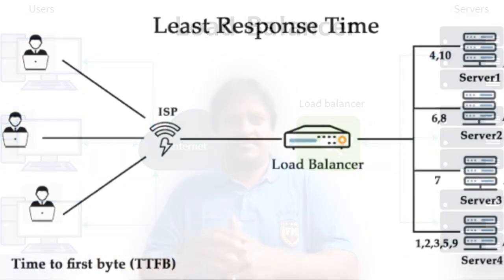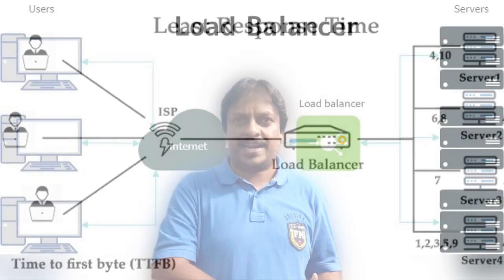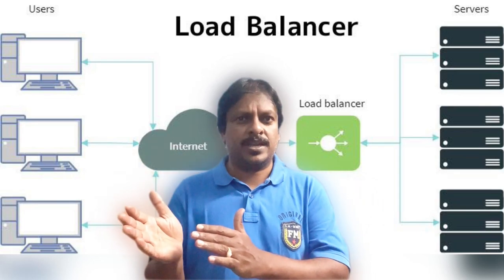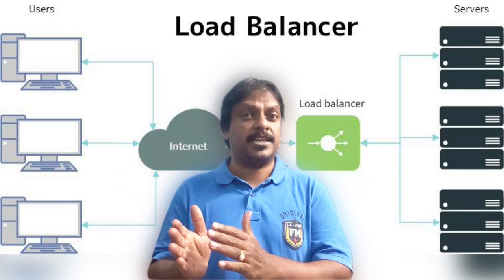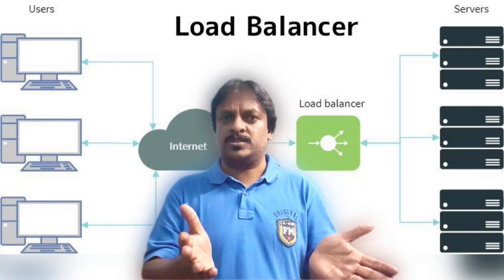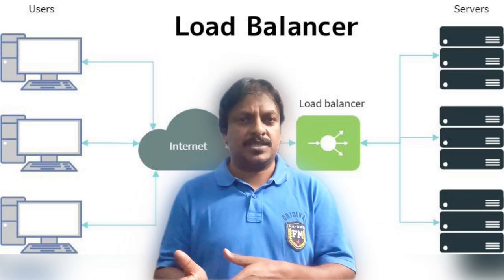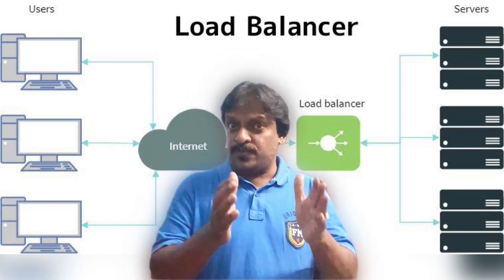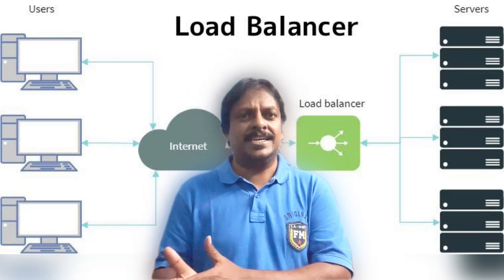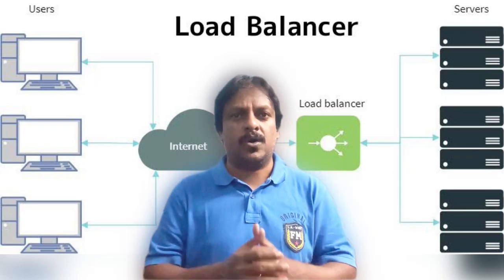Our next load balancing algorithm is least time. How it works is when a request comes from the client, the request will be sent to the server which has the least response time. Some servers may have 100,000 milliseconds response time, some may have 100 milliseconds, and some may have 10 milliseconds. The request will go to the server with 10 milliseconds response time. That's why we call this the least time load balancing algorithm.